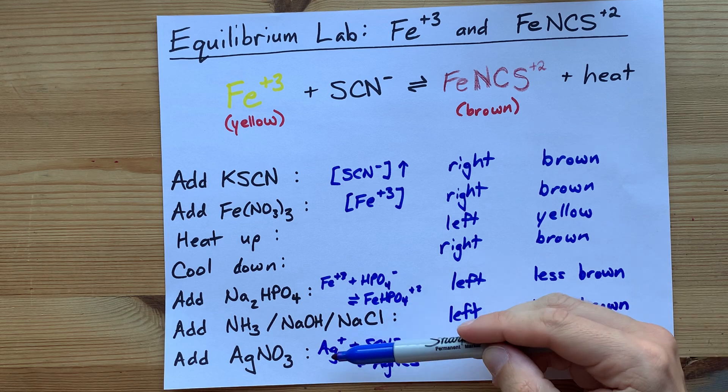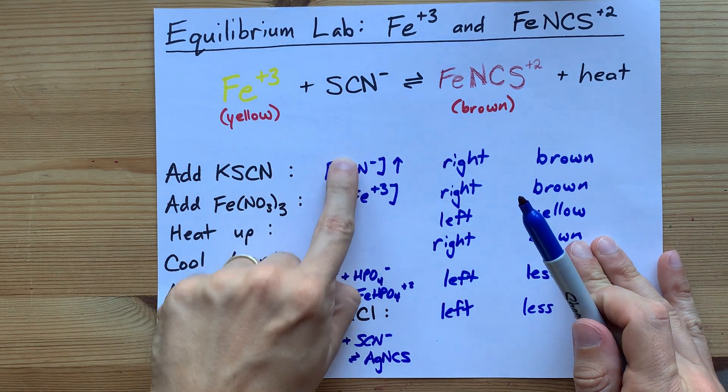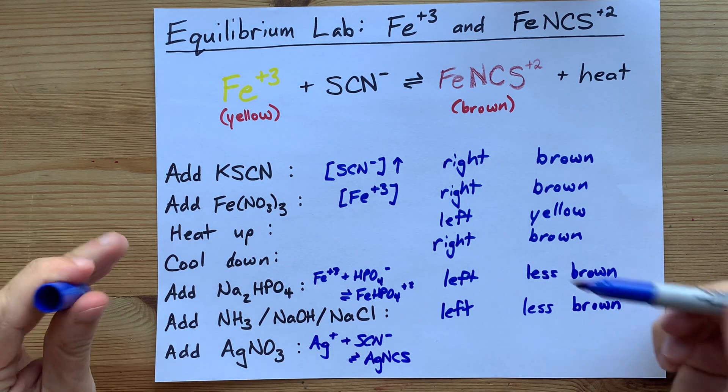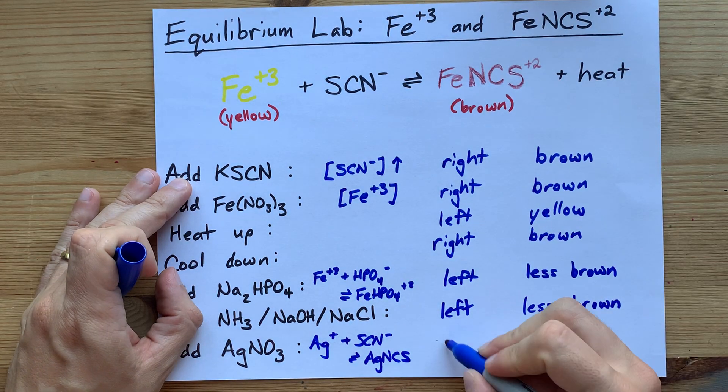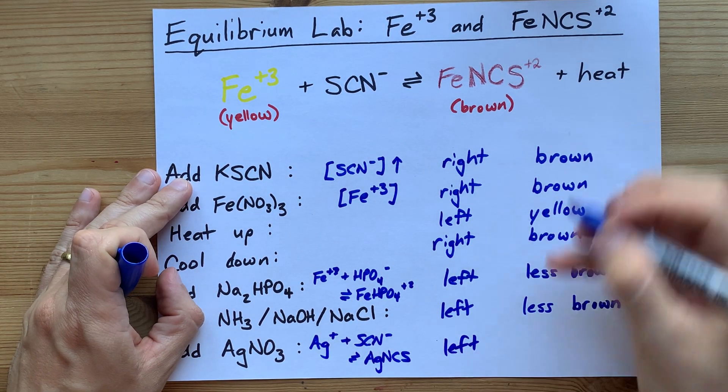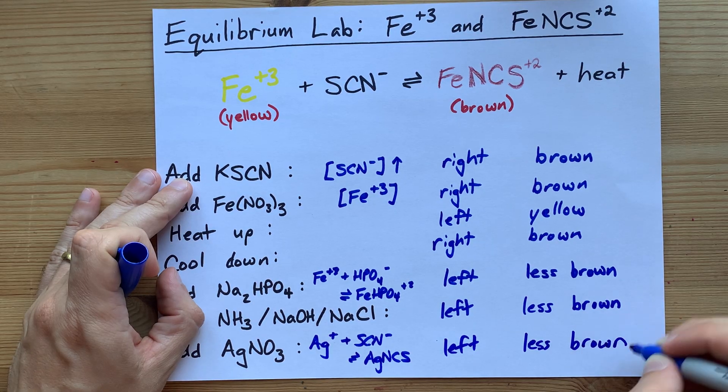What I do know is that Ag and SCN will react together. You're pulling thiocyanate out of solution. So to replace what's missing, you shift to the left, and you're going to appear less brown, possibly even more yellow.